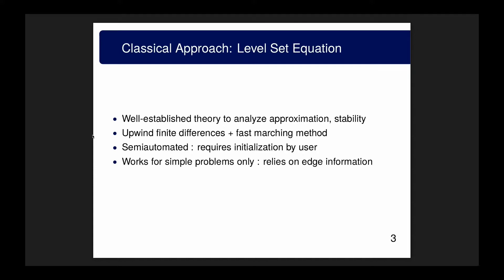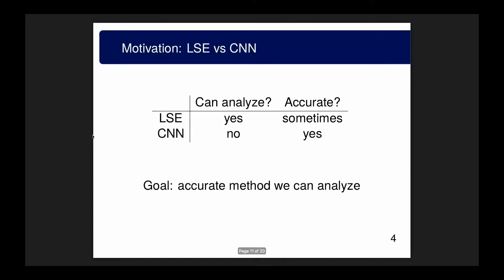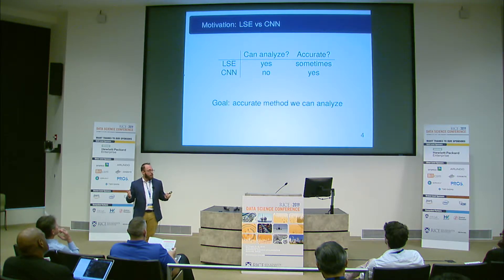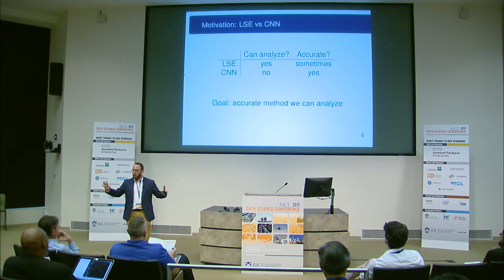The level set equation is agnostic to which edges are important, so finding which edges matter is just as difficult as finding the liver edges themselves. This method works, but requires more information than we assume we already have. Convolutional networks work great — especially for many medical imaging problems — and are sort of the gold standard right now. However, we can't really analyze them in any meaningful way. We treat them as black boxes: we train them and go.